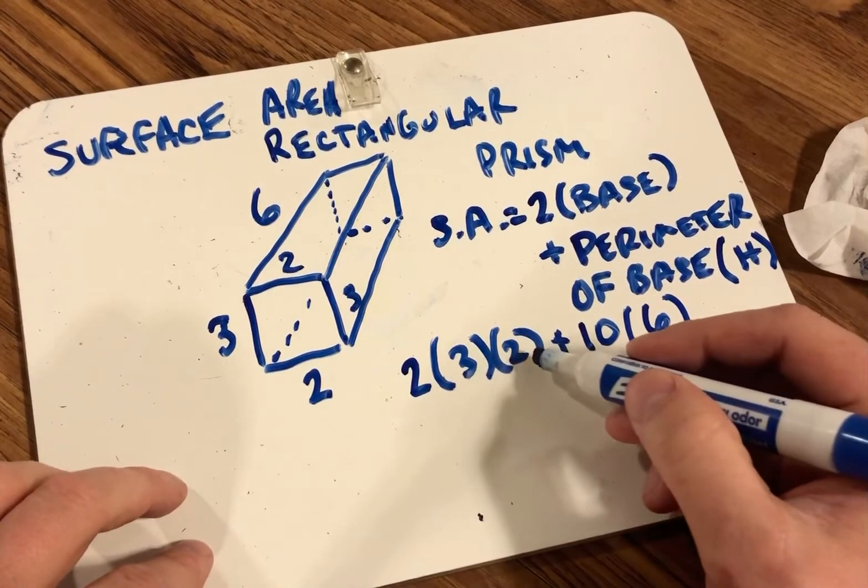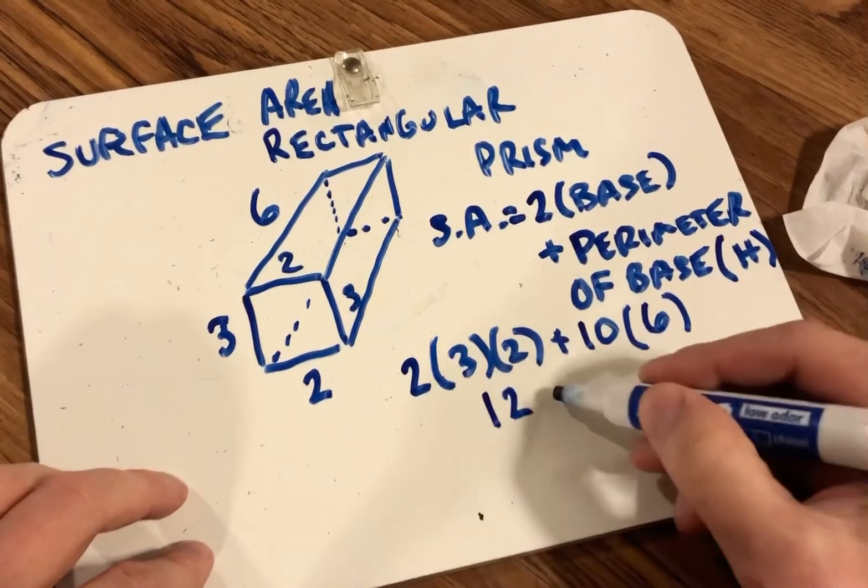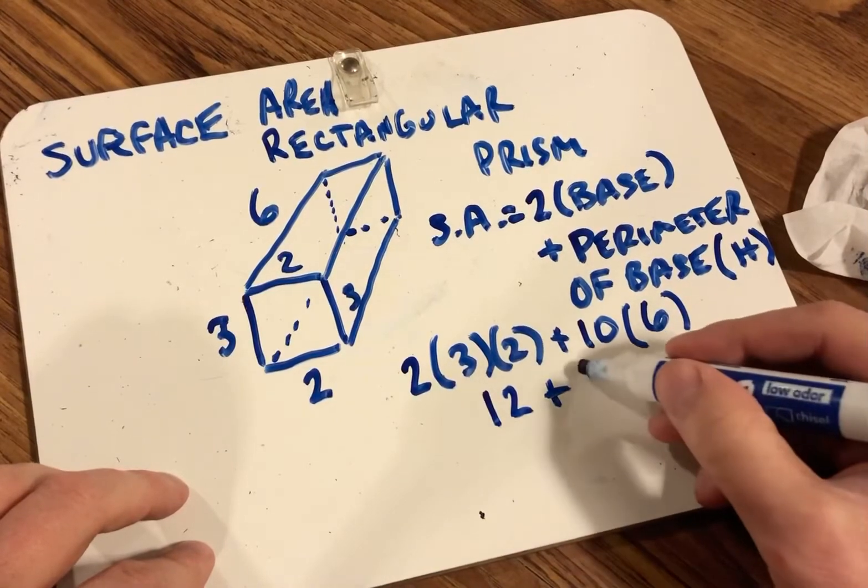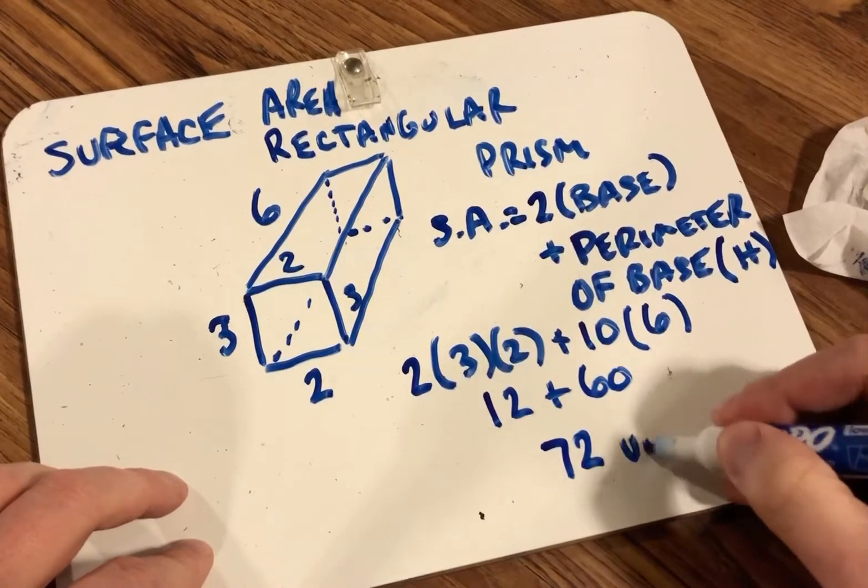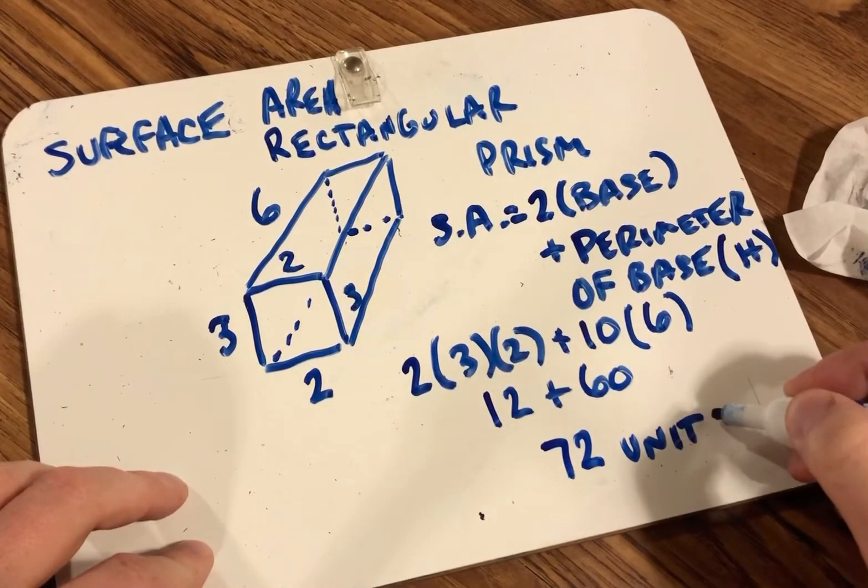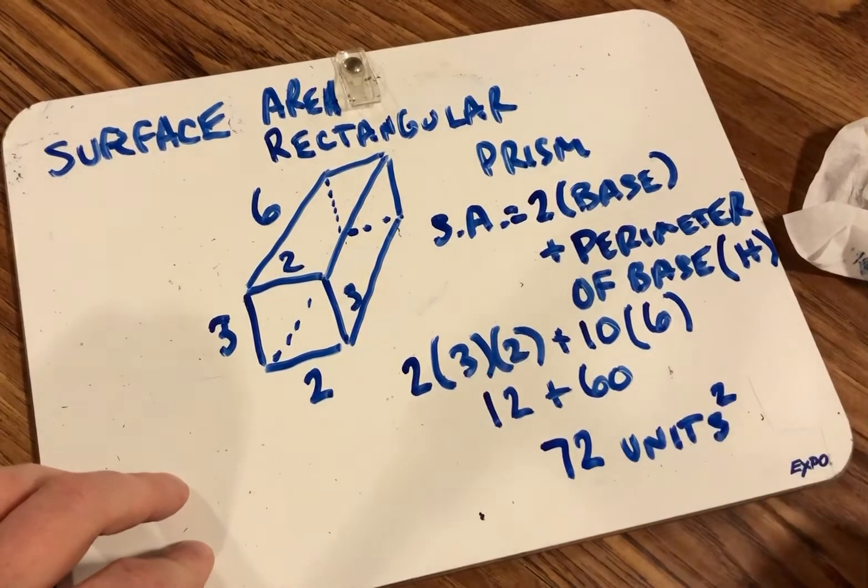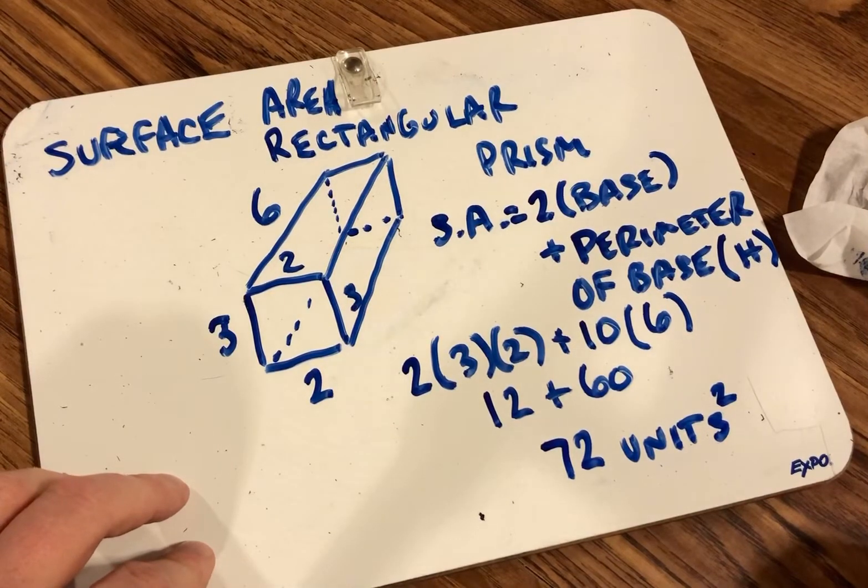Two times three is six, times two is 12. Ten times six is 60. Twelve plus 60 is 72, so this would be 72 square units for my surface area.